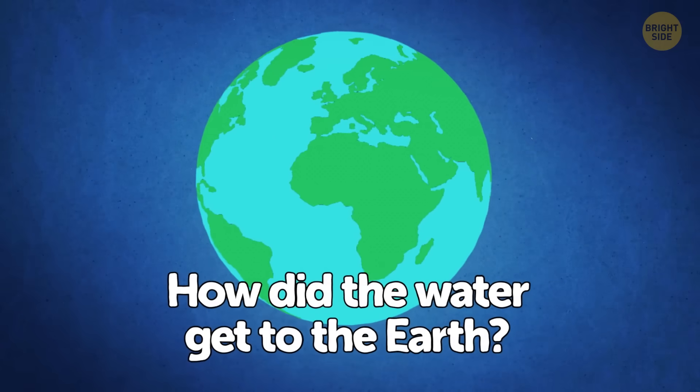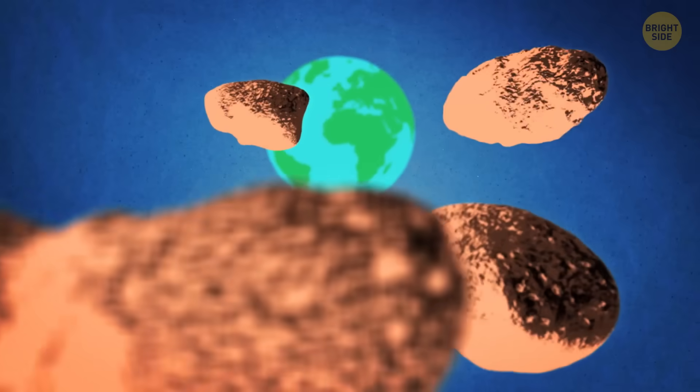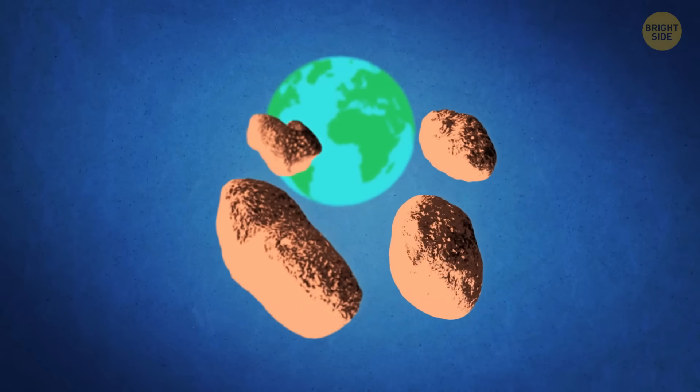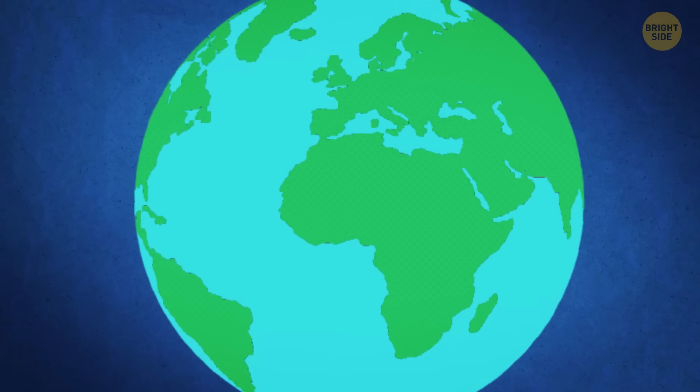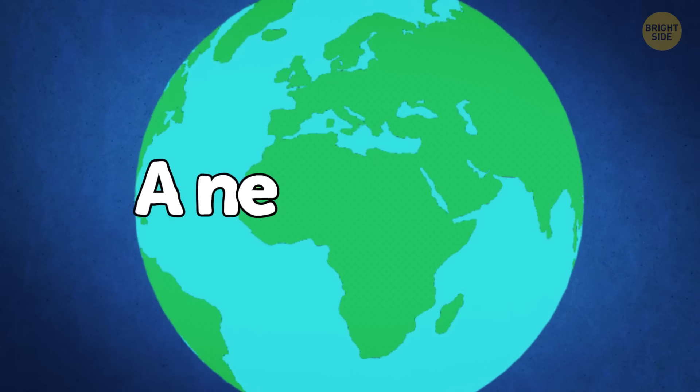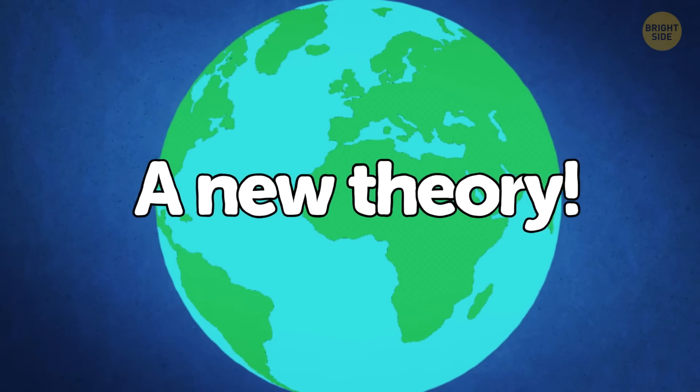But how did the water get to the Earth? Well, scientists used to think that it was brought to us by comets and asteroids. They crashed into our planet a lot and eventually brought a lot of water to it. But now that we learned more, they have a new theory.